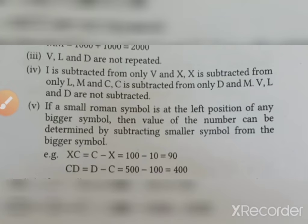If a smaller Roman symbol is at the left position of any bigger symbol, then the value of number can be determined by subtracting. XC, X is left of C, so 100 minus 10 is 90. CD, C is left of D, so 500 minus 100 equals 400. This is our rule.